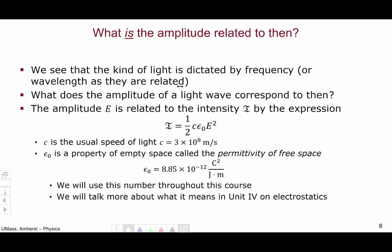The amplitude, remember we're using capital E for the amplitude, is related to the intensity of the light, as in the watts per square meter, by this expression. The intensity is one-half C epsilon naught E squared. Where C is the usual speed of light, three times ten to the eighth meters per second. And epsilon naught is a property of just empty space. You might not think of empty space as having properties, but it does. So, epsilon naught is a property of empty space called the permittivity of free space. And it has this value, 8.85 times ten to the minus twelve. Coulomb squared over joule meters.